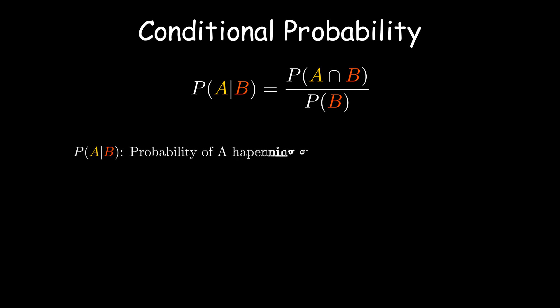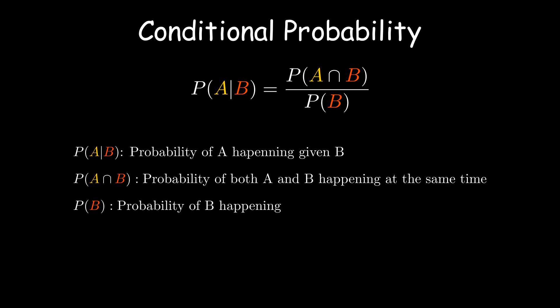P of A given B is the probability of A happening given B has already happened. P of A intersect B is the probability of both A and B happening at the same time and P of B is the probability of B happening.